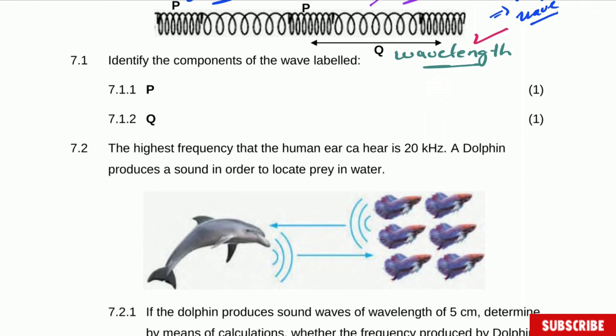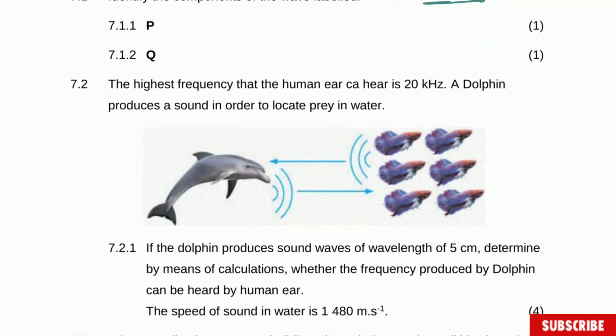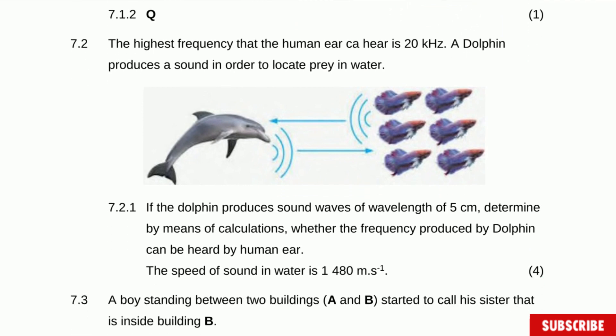The higher frequency than the human ear can hear is 20,000 hertz. A dolphin produces a sound in order to locate prey in the water. If the dolphin produces a sound wave of wavelength 5 centimeters, determine by means of calculation whether the frequency produced by the dolphin can be heard by humans. The speed of sound in water is 1480 meters per second. Let's see what data we have for this question.